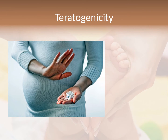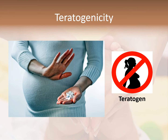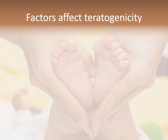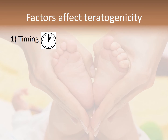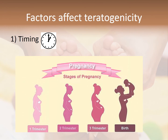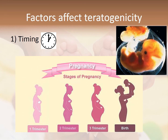Teratogenicity is the capacity of an exogenous agent to cause fetal abnormalities and malformation. A teratogen is a chemical substance, usually a drug, that causes fetus malformation when given at any stage of pregnancy. The factors that affect teratogenicity include, first, timing — the effect of a teratogen depends on which period in the pregnancy the child is exposed to it. Some teratogens cause damage only during specific days or weeks in early pregnancy, while others are harmful at any time. The baby is more susceptible to teratogenic damage in the embryonic stage, in which most body organs are developed.